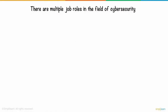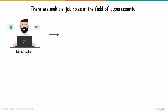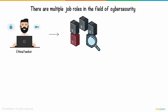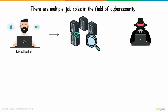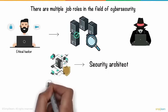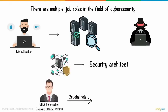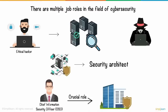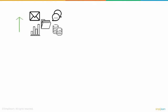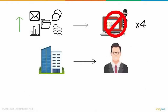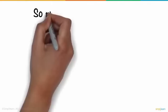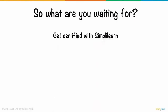There are multiple job roles in cybersecurity. Ethical hackers try to exploit network vulnerabilities just like a hacker would, but only to identify and resolve them. Security architects design robust security structures. A Chief Information Security Officer (CISO) plays a crucial role in enterprise security and is entrusted with the overall safety of an organization's information. With the increase in global digital data, cyber attacks are anticipated to quadruple. Get certified with Simply Learn and become a cybersecurity expert.